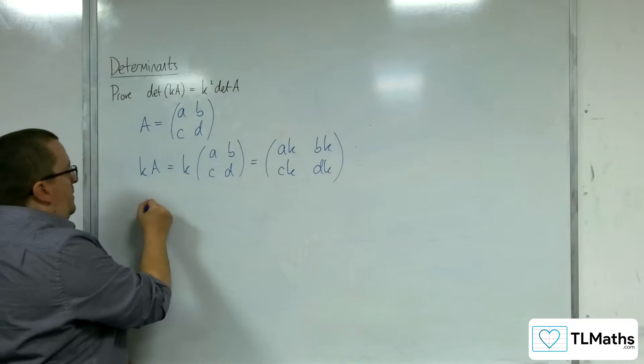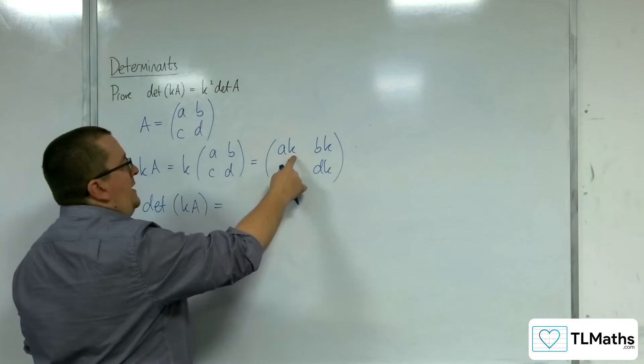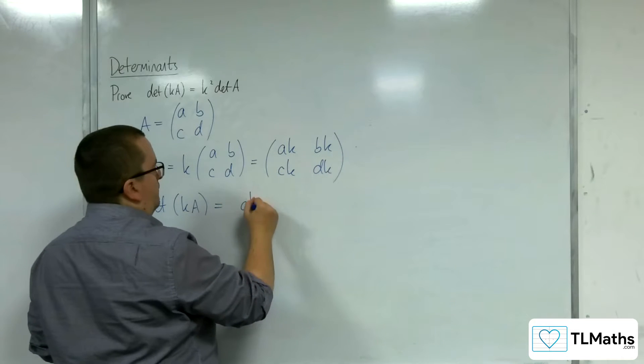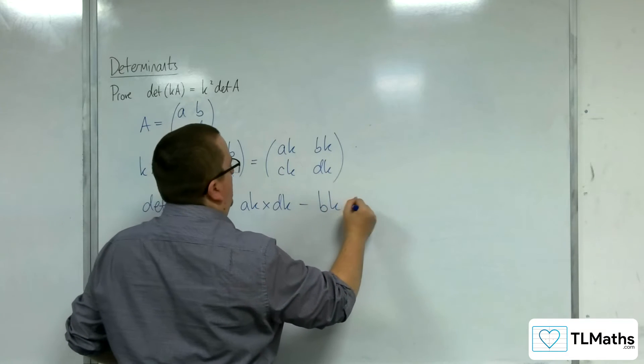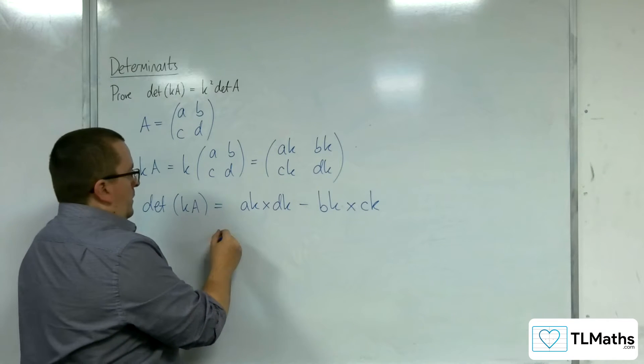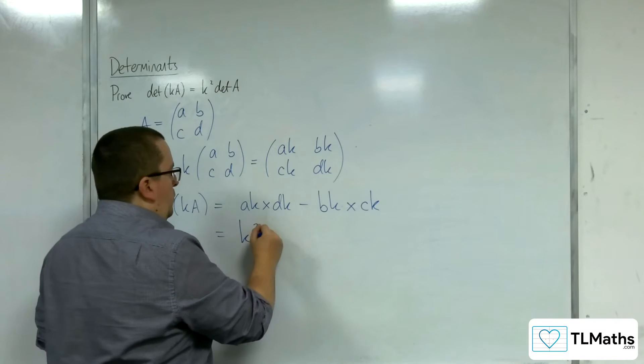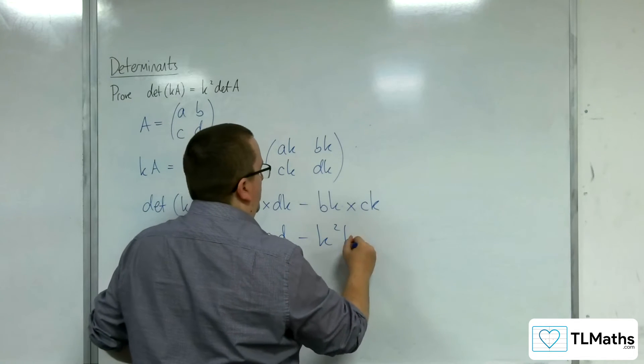So the determinant of k times A is equal to kA times kD, take away kB times kC. So we're going to get k squared AD, take away k squared BC.